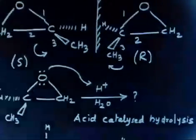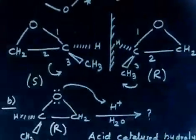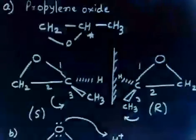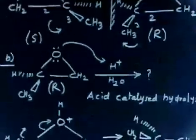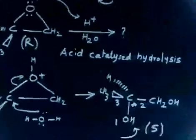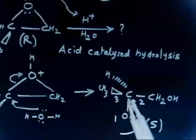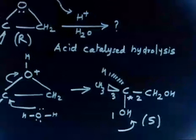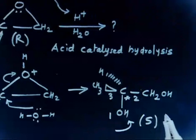So this means: if you take R-propylene oxide and do acid-catalyzed hydrolysis, the final glycol product — CH₂OH on this side, OH on the other, where adjacent carbons both contain OH groups (these are called glycols) — in this case the glycol obtained is S-glycol.